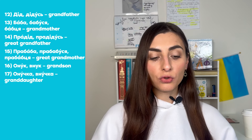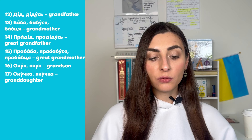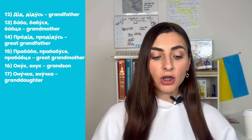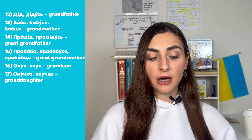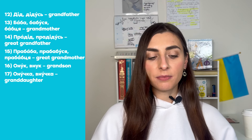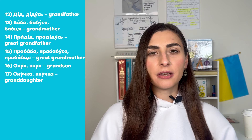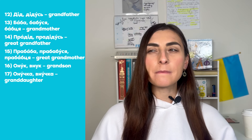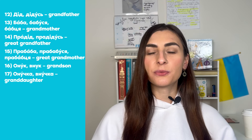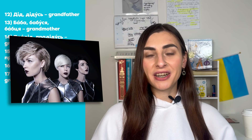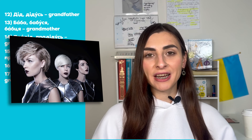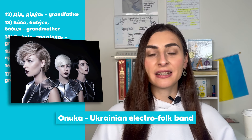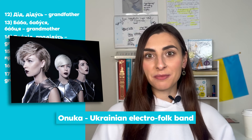Онучка, or внучка, means granddaughter. You can also say онука. There is a very famous Ukrainian folk electric band called Онука, which means granddaughter.